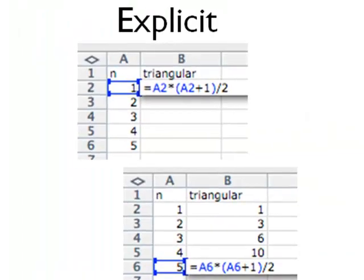Using explicit formulas here on the right side, still looking at the triangular numbers, one formula for the triangular numbers is n times n plus 1 all divided by 2. And that information for n is located in cell A2 here and then later cell A6. By filling this formula down, we're able to get the same triangular number sequence.